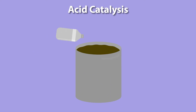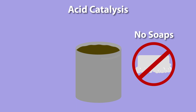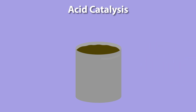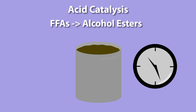Acid catalysis uses a strong acid such as sulfuric acid to catalyze the esterification of the FFAs and the transesterification of the triglycerides. It doesn't produce soaps because no alkali metals are present. The esterification reaction of the FFAs to alcohol esters is relatively fast, proceeding to completion in one hour at 60 degrees C.